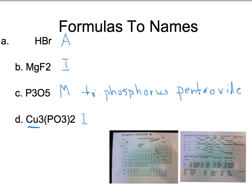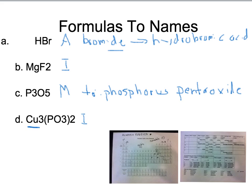For the acid, you do the conversion. This is an element, so it ends in -ide — specifically bromide. Then -ide converts using the memorized rule: -ide always turns into hydro-...-ic. So the name is hydrobromic acid.